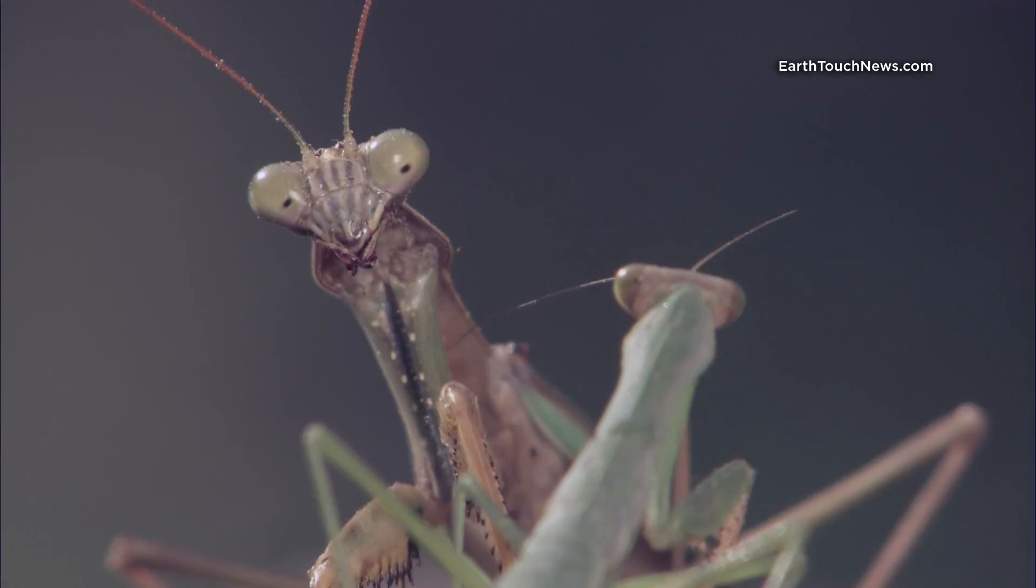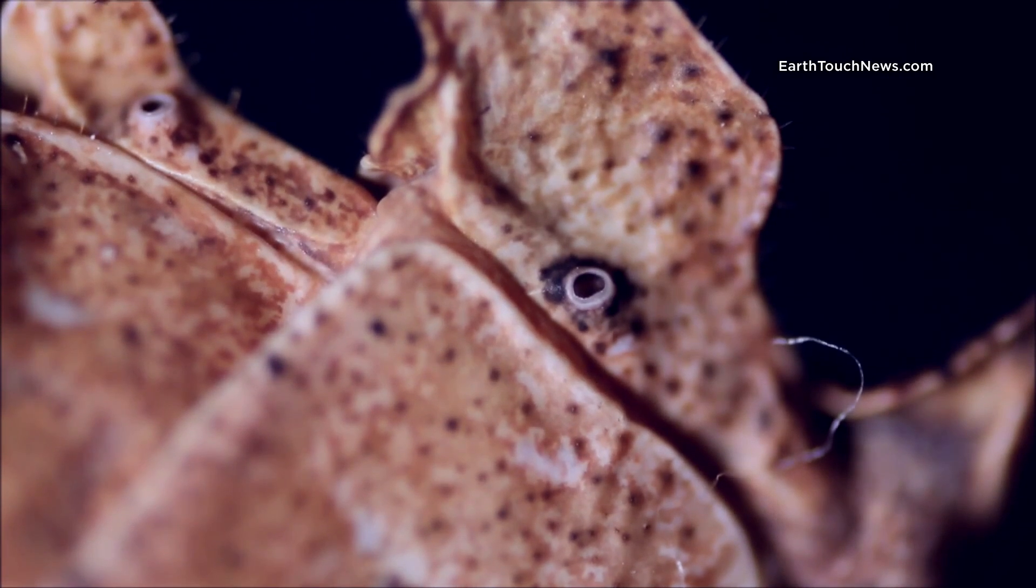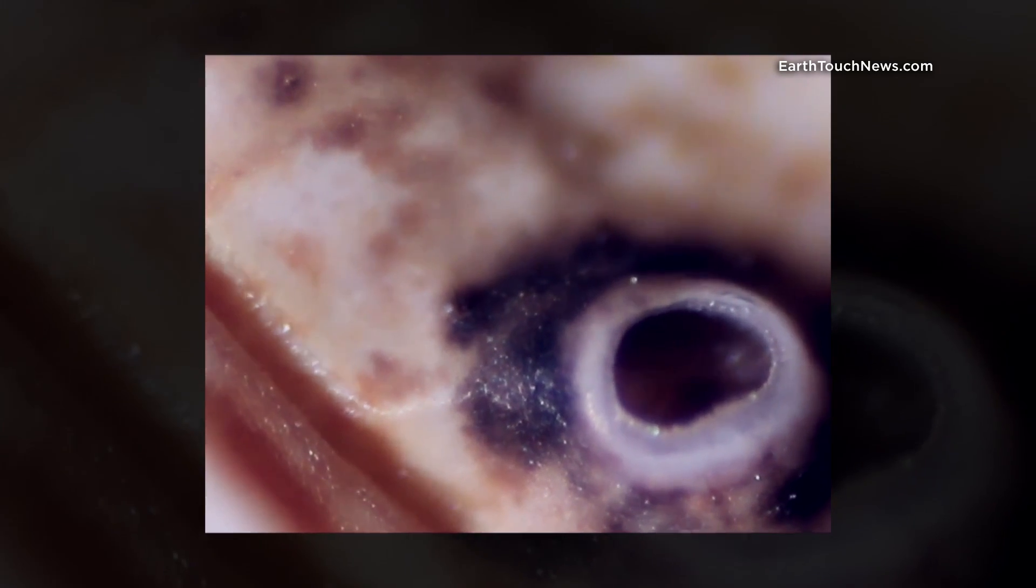That's not the only freakish thing about mantids. They also breathe through their skin, through these tiny openings on their bodies called spiracles.